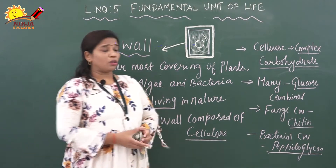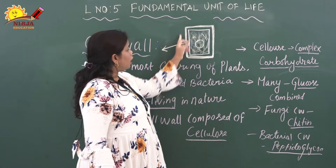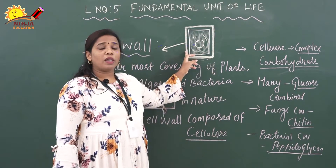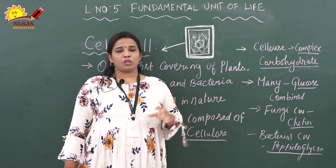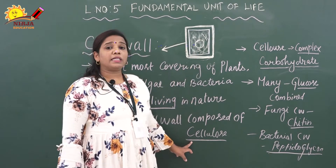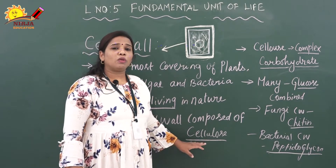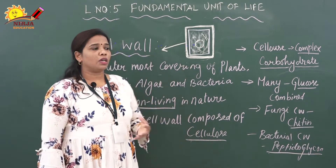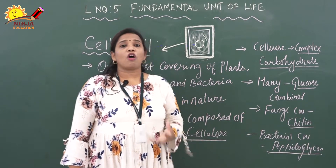Normally, how does it look? You can see in this picture — the outermost yellow-colored covering is called the cell wall. This cell wall is made up of cellulose. What is cellulose? Cellulose is a complex carbohydrate. It is made up of many molecules of glucose.